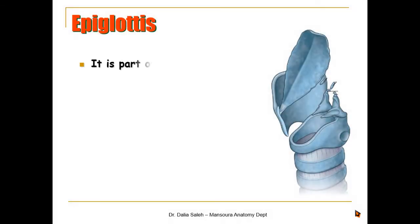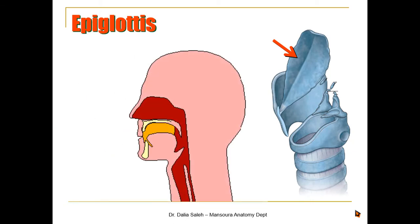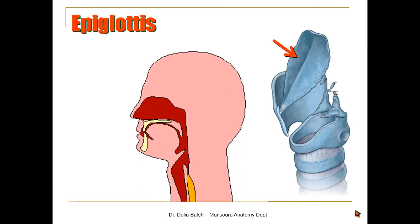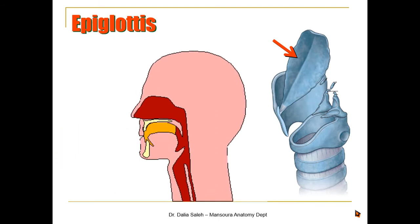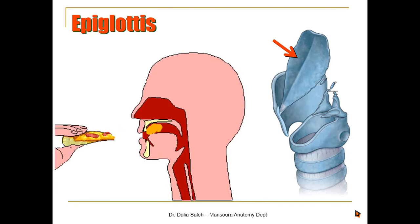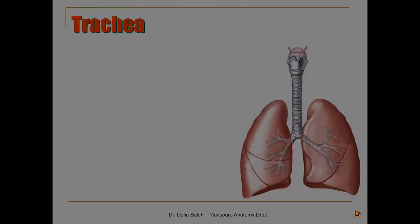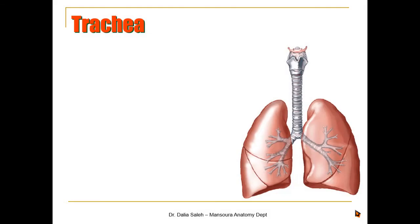The epiglottis is part of the larynx and acts as a flap that keeps food from entering the air passage. When you swallow, the epiglottis moves backward and closes the opening of the larynx, preventing food from entering the lower respiratory tract.